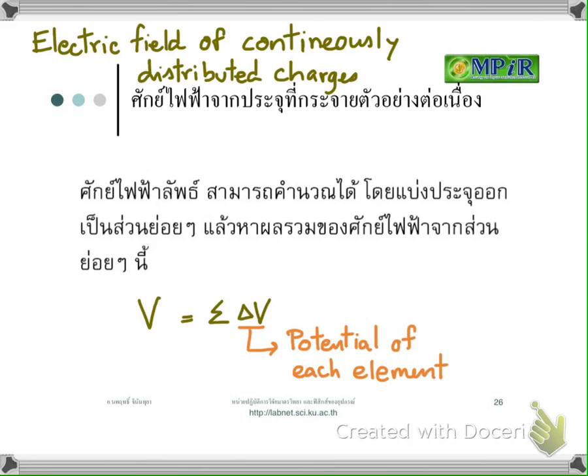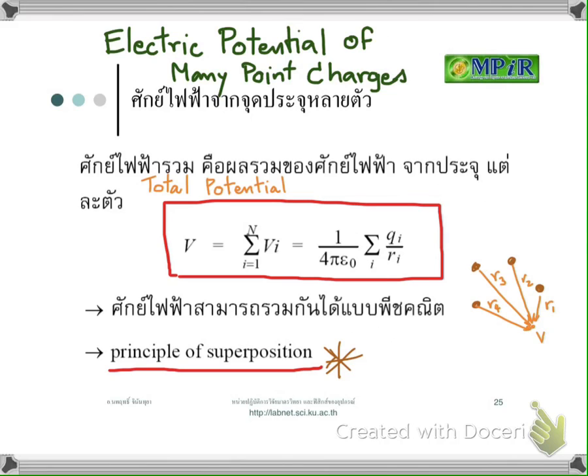We follow the same steps. When you are able to calculate the electric field from point charges, the next question is how can we calculate the electric field from a continuous distribution of charge? The formula for point charges is like Coulomb's law — you can use Coulomb's law only for point charges; you cannot use it in general.